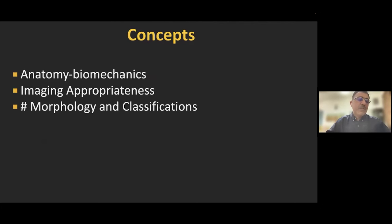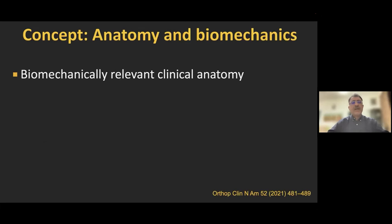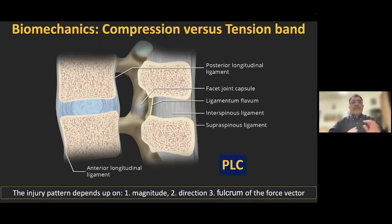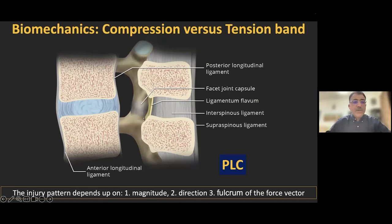As far as concepts are concerned, we'll cover anatomy and biomechanics, imaging appropriateness in spine trauma, and fracture morphology and classification. The motion segment is the basic motion unit and smallest functional unit of the spine. The spinal column can be divided into anterior and posterior columns. The anterior column consists of the vertebral body, ALL, the disc, and the PLL. The posterior column is the neural arch and all the ligaments connecting it, called the posterior ligamentous complex.